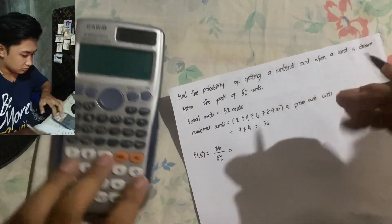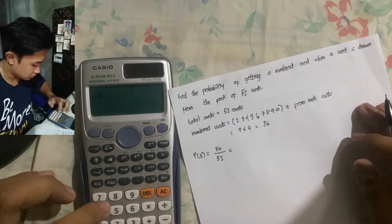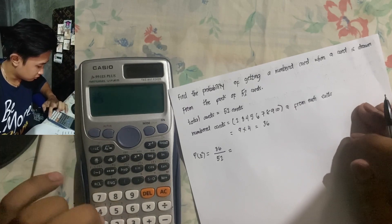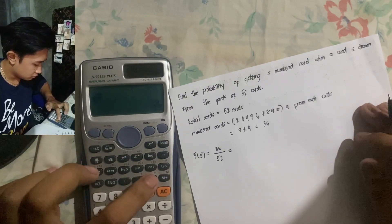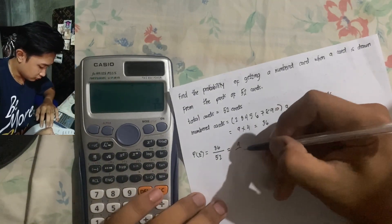It's equal to 36 over 52, which simplifies to 9 over 13.